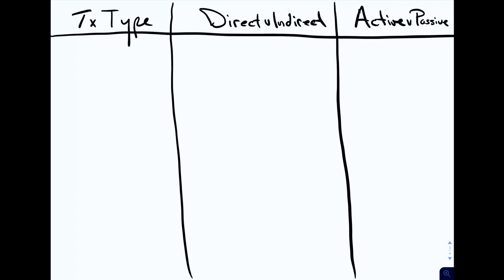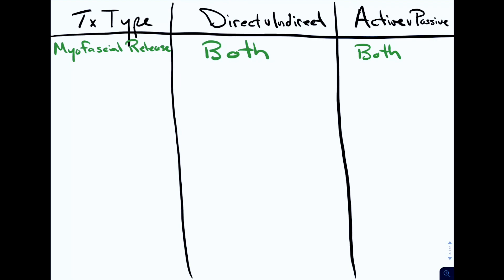First, we'll talk about a very common technique called myofascial release. You should try to predict whether these are going to be direct, indirect, active, or passive. In myofascial release, you can actually have both direct and indirect kinds depending on how you're doing it — so it could be both. You can also have myofascial release that involves both active and passive motion. For example, when treating a thoracic somatic dysfunction with fascial restriction, a lot of it will be passive motion while the patient is relaxed, but sometimes the patient adds an enhancing technique, which adds active motion.